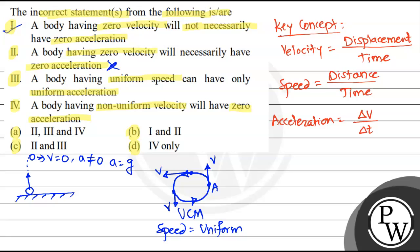So velocity is changing. Third statement kya bole hai? Body having uniform speed can have only uniform acceleration. Abhi velocity agar change ho rahi hai, velocity is not or non-uniform.